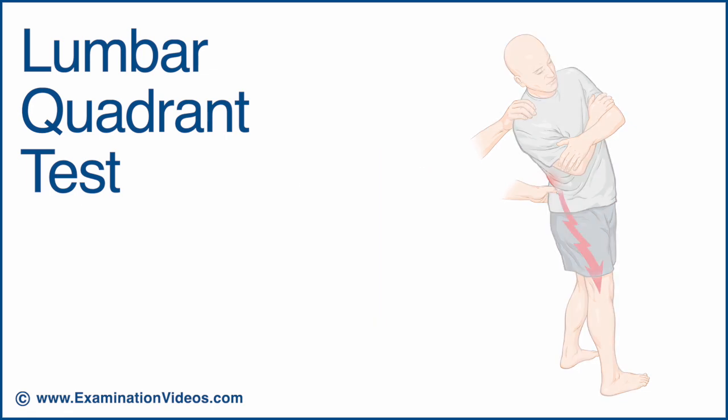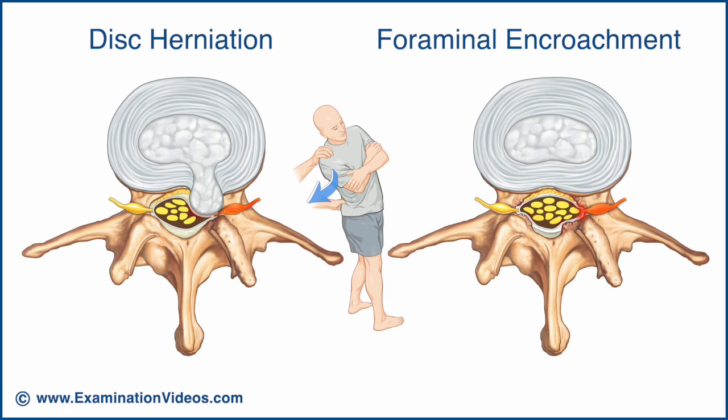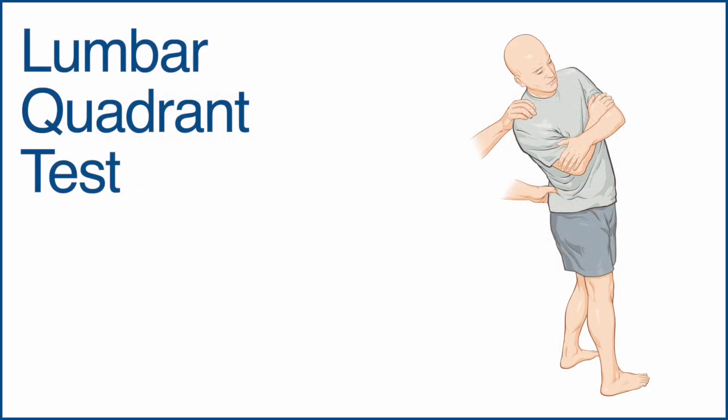Leg pain may also be due to compression of nerve roots from disc herniation or foraminal encroachment. This is because the final test position causes compression of the discs posterolaterally and reduces the size of the intervertebral foramen. This test may also be performed with the patient in the seated position.